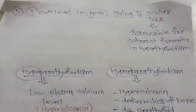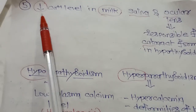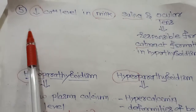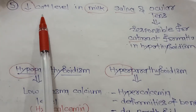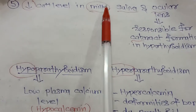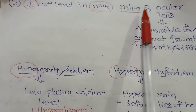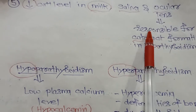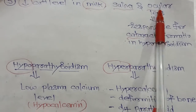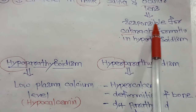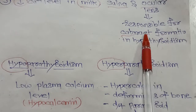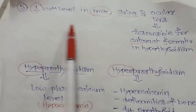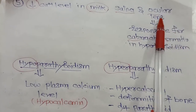PTH decreases calcium levels in breast milk, saliva, and the ocular lens. Because it decreases calcium in the ocular lens, PTH may be responsible for cataract development — this is relevant in the context of hypoparathyroidism, where low PTH leads to altered calcium levels.